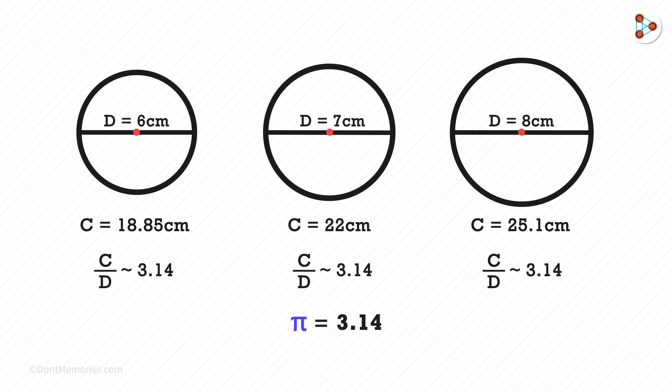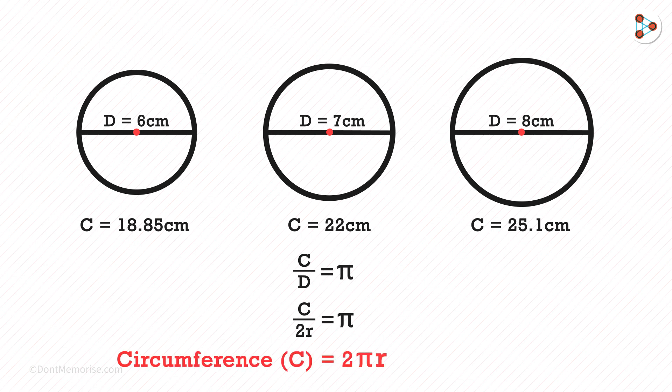Whenever you consider any circle, the value of circumference over diameter will always be pi. And that is your constant. And we know that the diameter is twice the length of the radius. And we get the formula of circumference as 2 pi r.